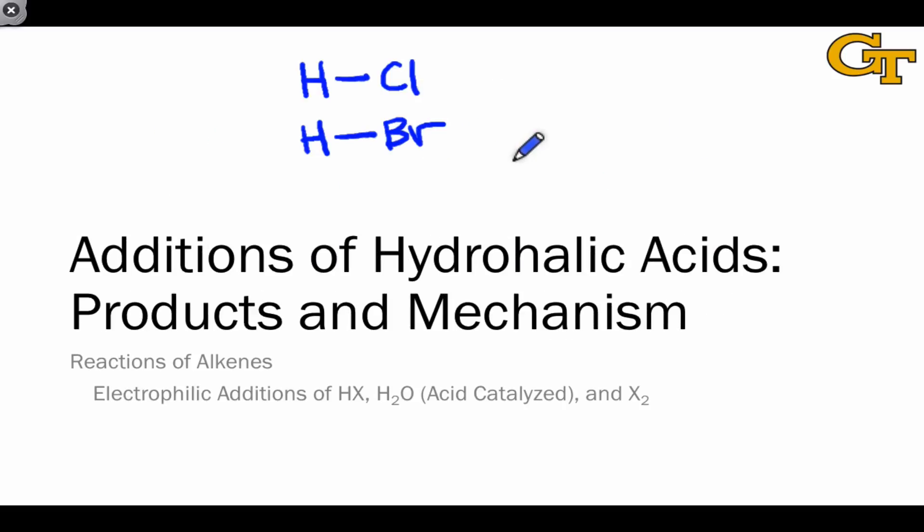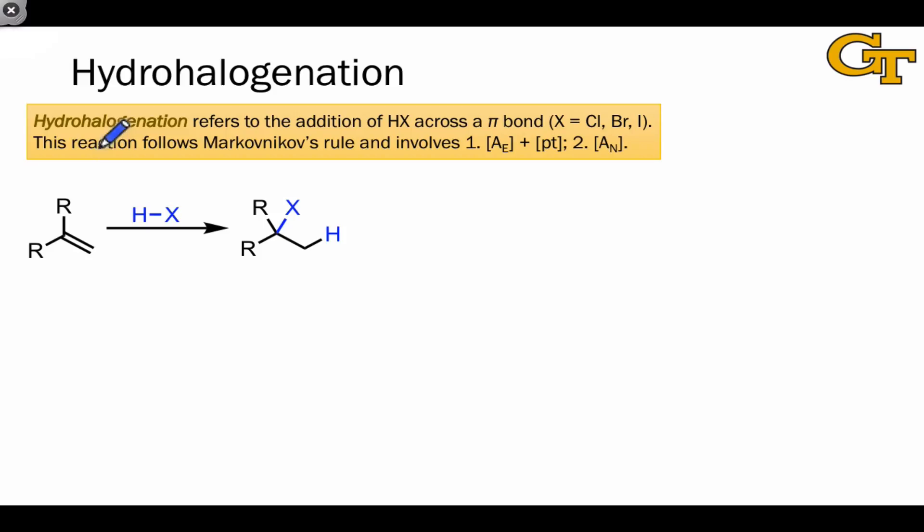Let's begin with electrophilic additions of the hydrohalic acids, especially HCl and HBr. The formal name for this reaction type is hydrohalogenation, since a hydrogen and a halogen are added across the atoms of the pi bond. HCl, HBr, and HI can all be used here. HF cannot be used because it's not acidic enough to protonate a double bond. Notice that the products of this reaction are alkyl halides, containing a halogen atom linked to a tetrahedral or alkyl carbon.